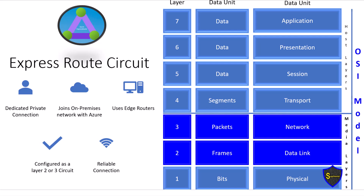An Azure ExpressRoute circuit is a dedicated private connection provided by a connectivity provider that joins the on-premises network with Azure through edge routers. This circuit utilizes the hardware infrastructure managed by the connectivity provider. It can be configured as a layer 2 or layer 3 circuit, offering a secure and reliable link between the on-premises network and Azure.